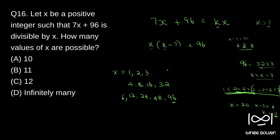We wrote all the combinations and counted: 1, 2, 3, 4, 5, 6, 7, 8, 9, 10, 11, 12. So we got 12 combinations — these are the 12 possible values of x. This is the logic and these are the possible combinations. The answer to question 16 is C, which is 12.